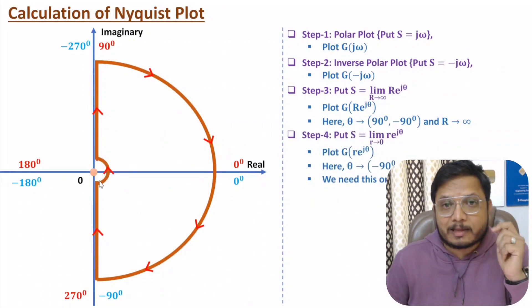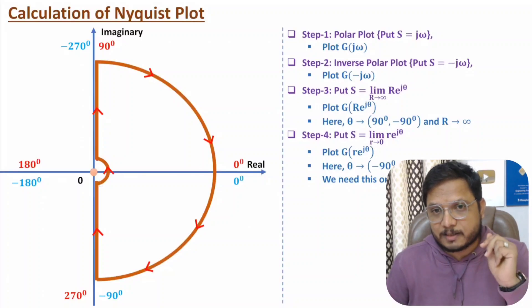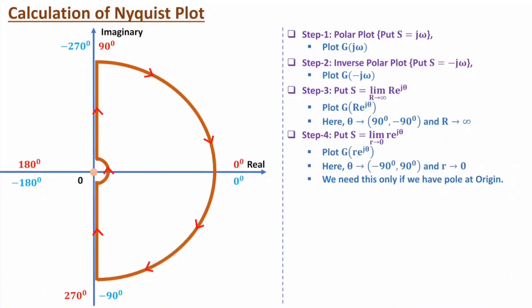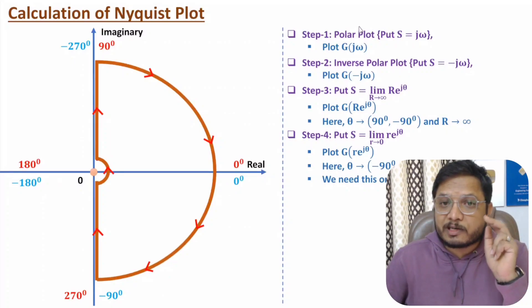The fourth line is applicable only if we have poles at the origin. This line has a small radius going towards zero, and theta varies from minus 90 to plus 90 degrees. So by examples you will get to know how exactly these lines appear. In the calculation of the Nyquist plot, all four lines are essential. The polar plot line I have already explained in my earlier videos.